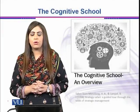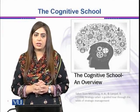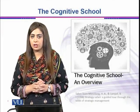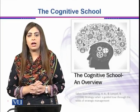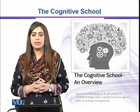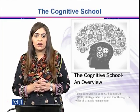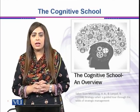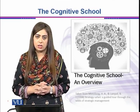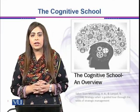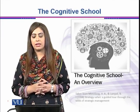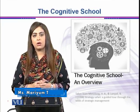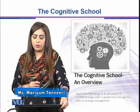Dear students, we were having an overview of the Cognitive School of Thought in Strategic Management. This is a descriptive school of thought which tells us how strategies are actually formulated, and how strategists take decisions. We need to see what is in the mind of a strategist while they are making decisions and developing the vision and mission of an organization. We were having an overview of the role of cognition in this whole process, and this video is also all about cognition and its different aspects.